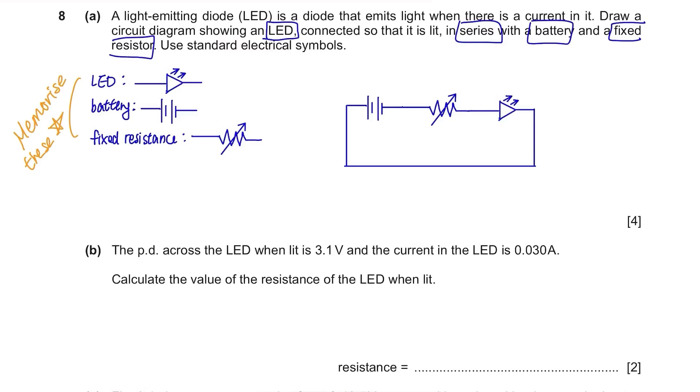Part B. The PD across the LED when lit is 3.1V and the current in the LED is 0.030A. Calculate the value of the resistance of the LED when lit. This is easy. Resistance equals voltage divided by current, so 3.1 divided by 0.030. 100 Ohms.